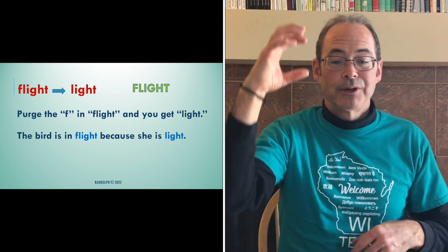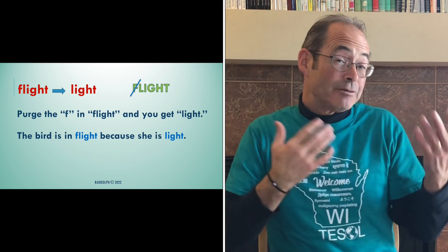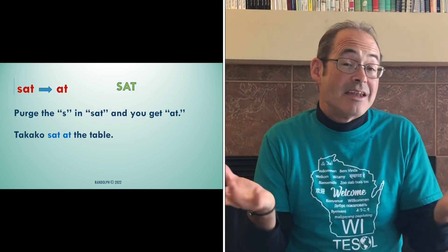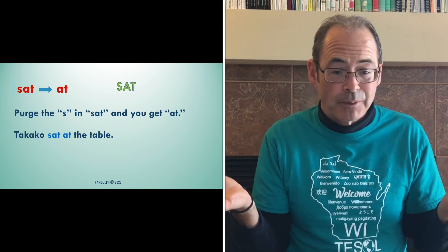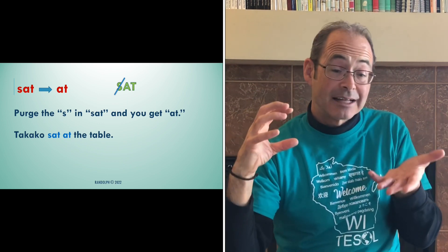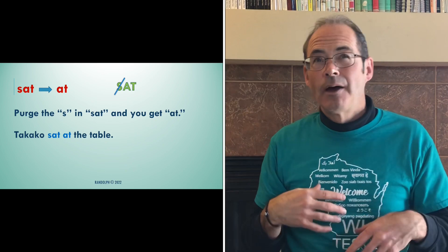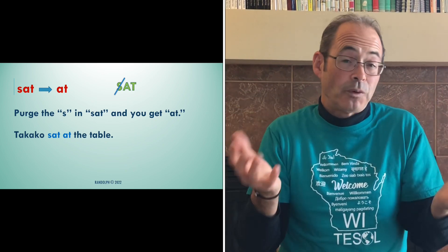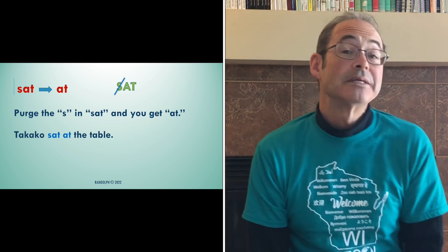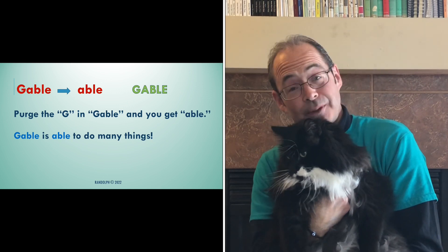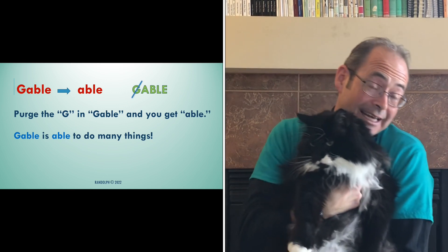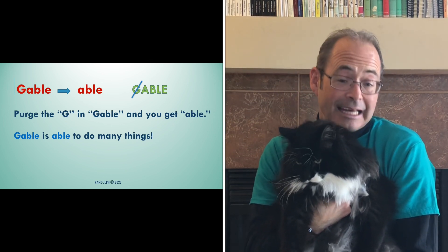'Flight' goes to 'light.' Purge the F in 'flight,' and you're left with 'light.' The bird is in flight because she is so light. And here's a grammar-based one: 'sat' and 'at.' Purge the S in 'sat,' and you're left with 'at.' Takako sat at the table. That's neat because in reference to what prepositions you use with 'sat,' you sit at the table — that's the preposition you usually use. And of course, we could never leave out Mr. Gable: 'Gable' goes to 'able.' Purge the G in 'Gable,' and you're left with 'able.' Gable is able to do many things. So do you see how fantastic these words are? In teaching new words, you can use this concept to help students find connections between other words.